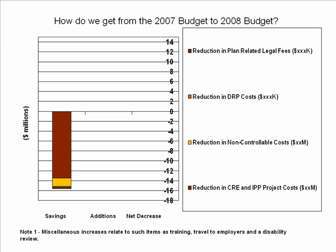What they're trying to show in this slide is what has contributed to a difference between the budget in 2007 and 2008. A typical approach is to use a stacked column graph, and in this case you see it's decreasing — they've decreased the budget in this particular area — and each portion of that stacked column represents one of the items.